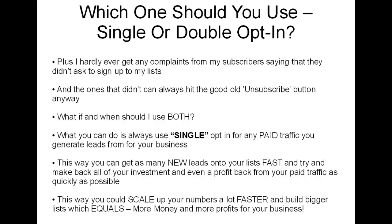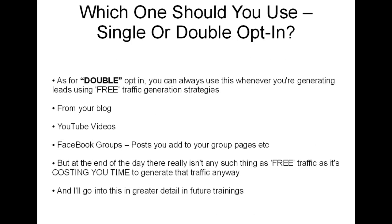With single opt-in for paid traffic, you can get as many new leads onto your list quickly and try to make back your investment — and even make a profit — as fast as you possibly can. Once you recoup those initial investments or make a profit, you can scale up your numbers faster, build a bigger list, which equals more money and profits. It becomes a self-sustaining business model where you reinvest into getting more paid traffic and fresh leads.